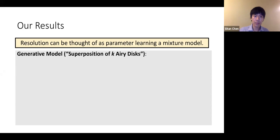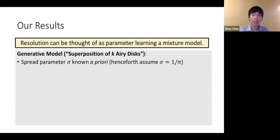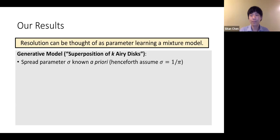As before we have a spread parameter sigma, which is known a priori — it only depends on known parameters like the wavelength of light and specific physical properties of the imaging system. Let's assume it's some fixed constant; this won't be important because our algorithms are scale-invariant.